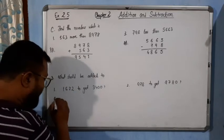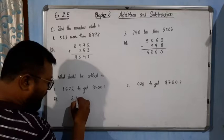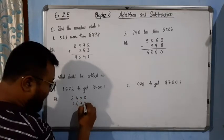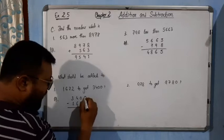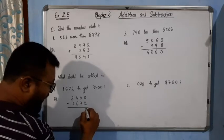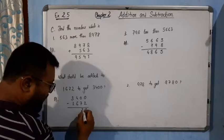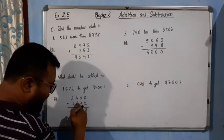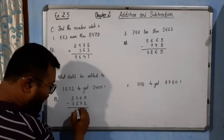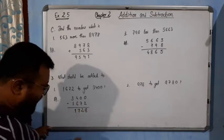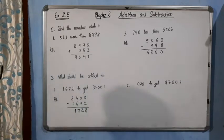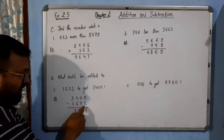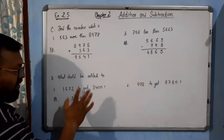The solution is very simple. 3400 minus 1672. 10 minus 2 gives 8. 9 minus 7 gives 2. Borrow to make 13. 13 minus 6 is 7. 2 minus 1 is 1. So the answer is 1728. If we add 1728 with 1672, we will get 3400.